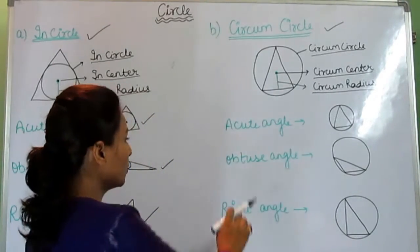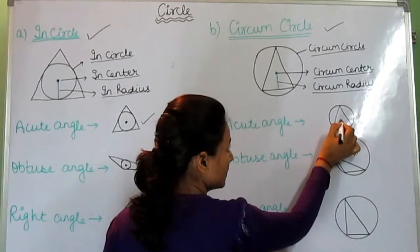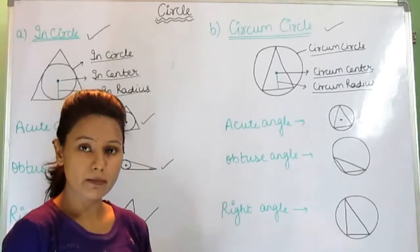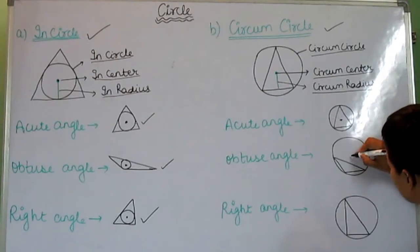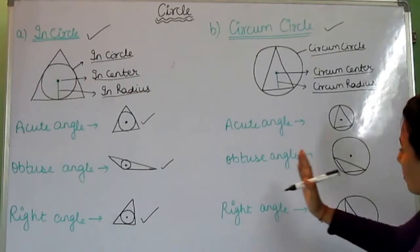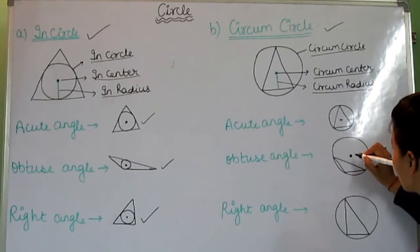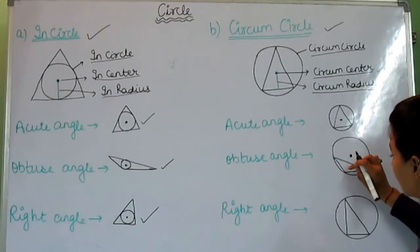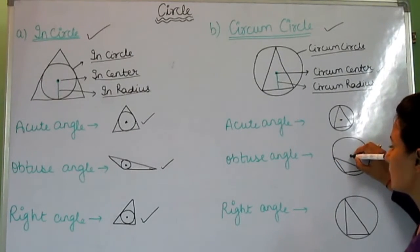Again we have three angles: acute angle, obtuse angle, and right angle. In the acute angle, this is the circumcenter. There is a very important point to note: in an obtuse angle, the circumcenter always lies outside the triangle. It does not lie inside the triangle; it lies outside the triangle.